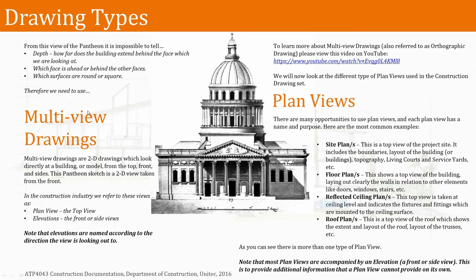That is why we produce what we call multi-view drawings. We look at the drawing from the top, from the front, and from its side. In construction drawing, we refer to the top view as a plan view — anything viewed from the top is a plan view. Anything viewed from the front or sides we refer to as elevations, and elevations are named according to the direction the view is looking out to.